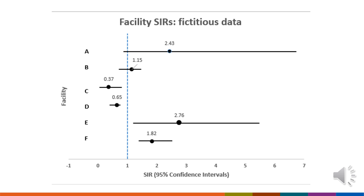Another way to view the SIR data is via a line graph. Six facilities are identified with letters A through F. The dotted blue vertical line represents the national baseline of 1.0. Facilities A and B have non-significant SIRs as their confidence intervals cross the dotted line — their SIRs are not significantly different from the national baseline. Facilities C and D have statistically significant SIRs because the entire confidence interval does not cross the dotted line; their SIRs are significantly lower than the national baseline. Facilities E and F also have statistically significant SIRs that are higher, or worse, than the national baseline.